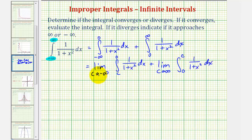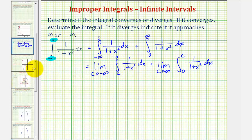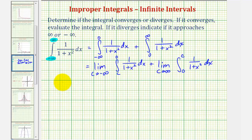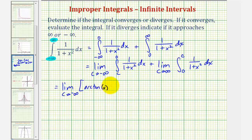Now we'll integrate, then determine the limits. For the integral of one divided by the quantity one plus x squared, we'll be using this integral formula here. Notice a would be one and u is just x. So we'll have the limit as c approaches negative infinity of arc tangent x, and we still have our limits of integration from c to zero.